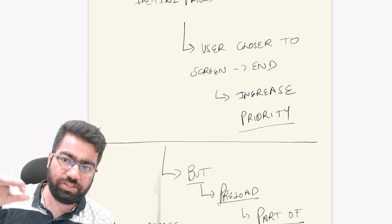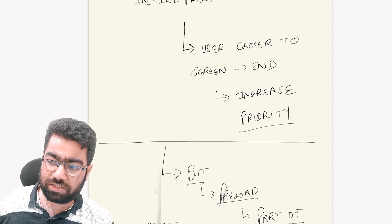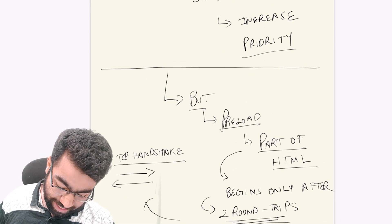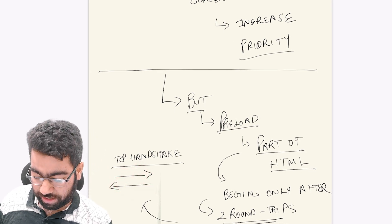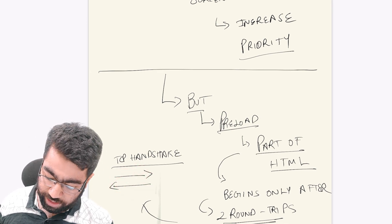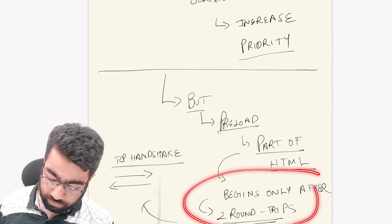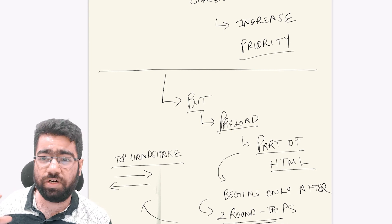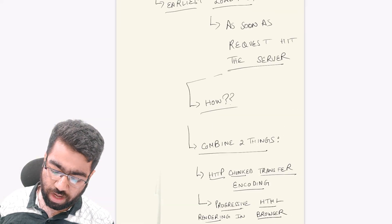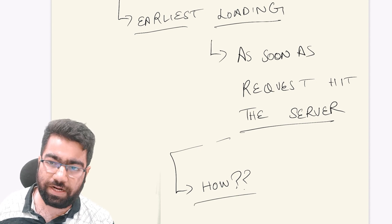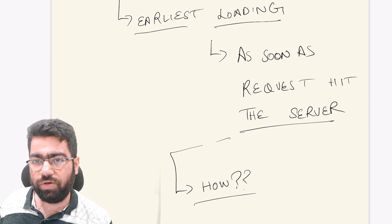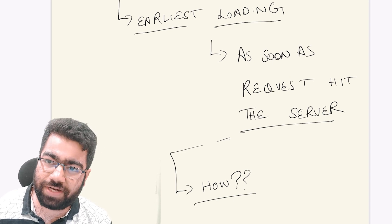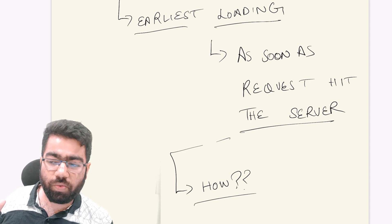The second optimization we come to: the preload tags only start being processed after you have fetched the complete HTML from the server. This involves a two-way round trip — like the TCP handshake, it is a two-way handshake and a round trip connection. The parsing begins only after those round trips are over. So how do we make it even faster? We want to load it even before that. We can't start bringing data when the person has not even requested, so what we want is: as soon as the request reaches our server, we want the page to start loading.